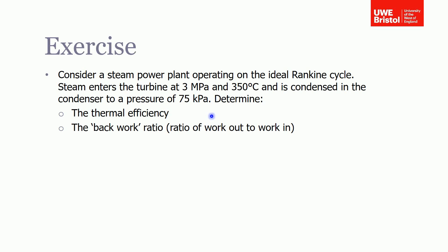I'm going to go through the solution to this exercise question. We have a steam power plant operating on the ideal Rankine cycle. The steam enters the turbine at 3 megapascals and 350 degrees C, and is condensed in the condenser to a pressure of 75 kilopascals. We are asked to find the thermal efficiency of the plant and the back work ratio, which is the ratio of the work you have to put in to the work you get out.